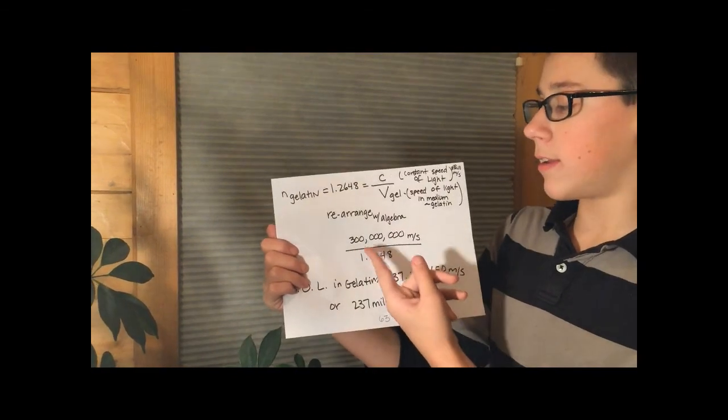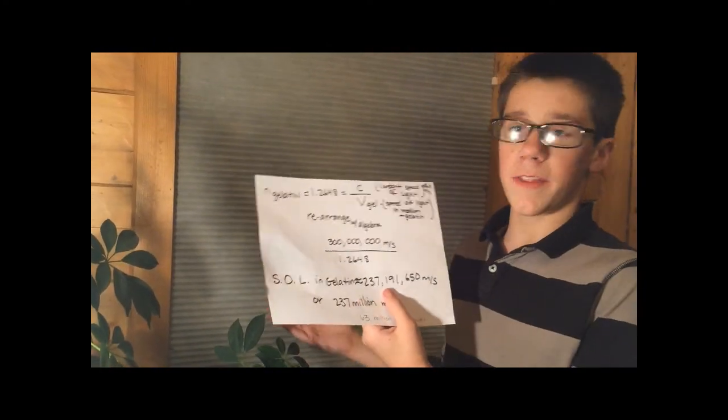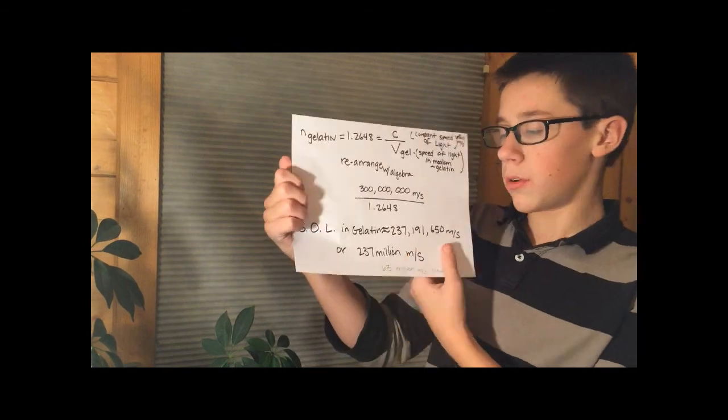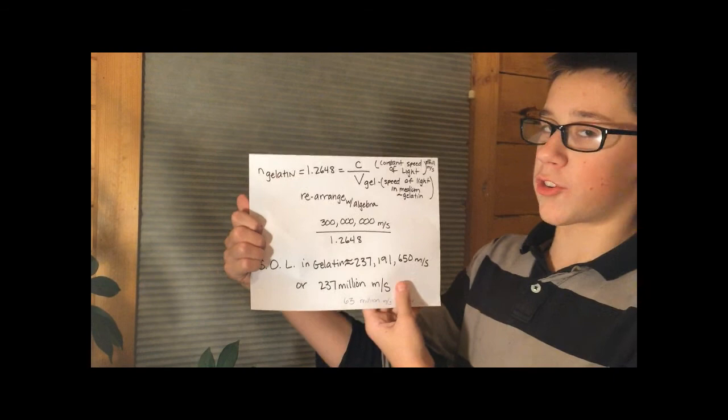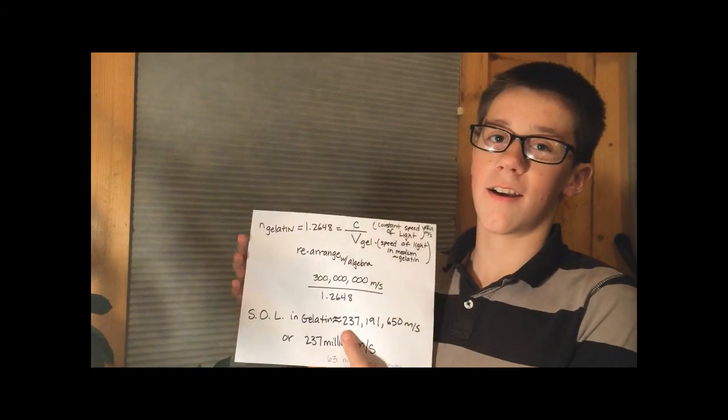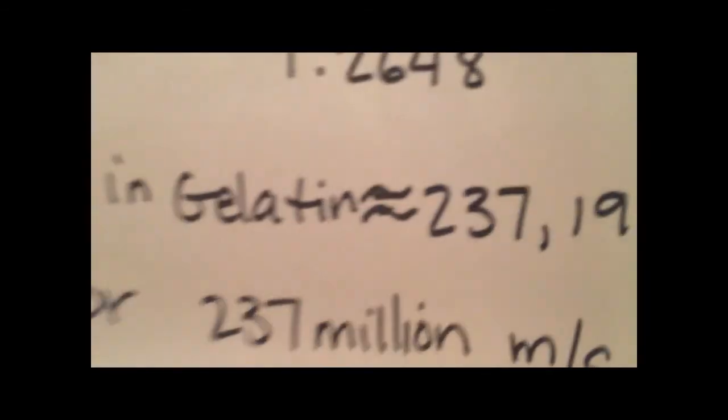The speed of light is 300 million meters per second. We divide that by our refraction index, which gives us 237 million meters per second—about 63 million meters per second slower than air. Isn't that awesome!